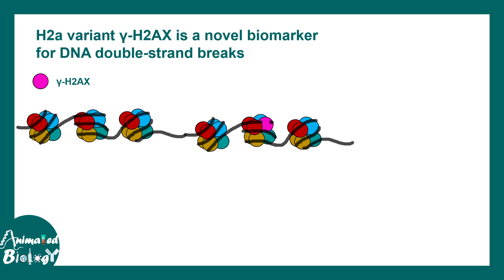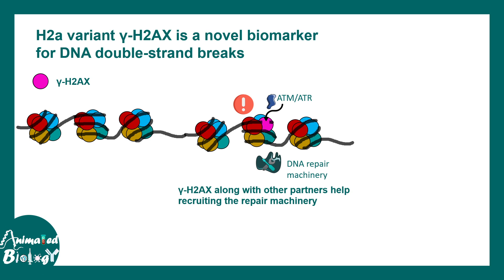There is another H2A variant known as gamma-H2AX, which is a novel biomarker for double-stranded DNA breaks. Where there is a double-stranded DNA break, gamma-H2AX is recruited. Gamma-H2AX, along with kinases such as ATM or ATR, recruits the DNA repair machinery. This is super important for cell survivability, which is why these histone variants are really important.